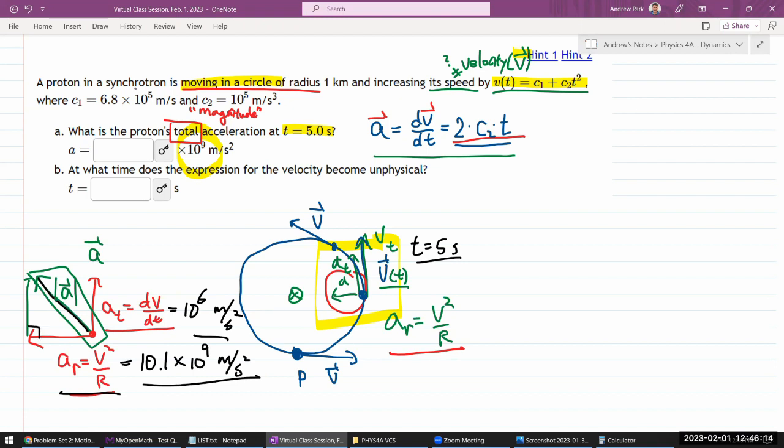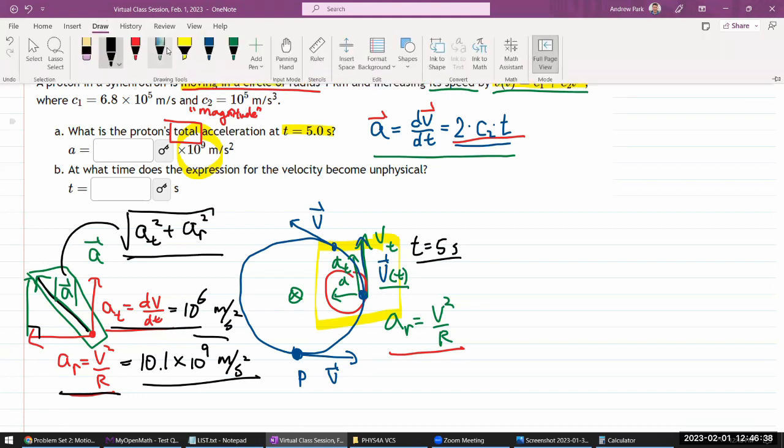So to find this hypotenuse of the right triangle, what you have to do is use Pythagorean theorem. So this will be square root of AT squared plus AR squared. Now, having said that, I can tell you that given the big difference between these two numbers, this is 1,000 times smaller, or sorry, 10,000 times smaller than this. The magnitude will be basically this.